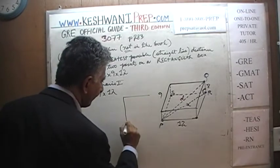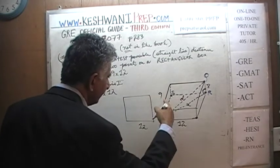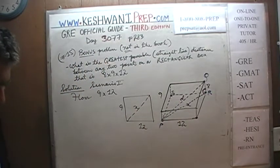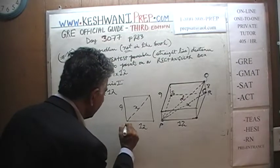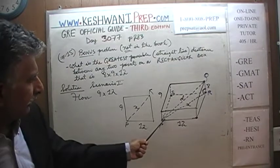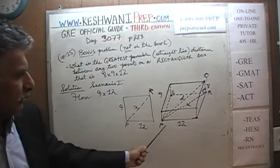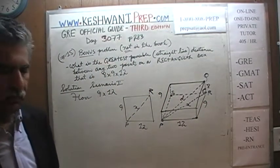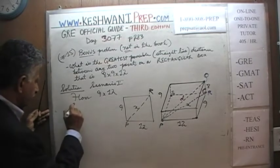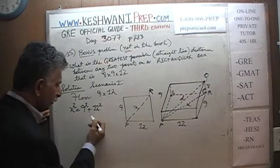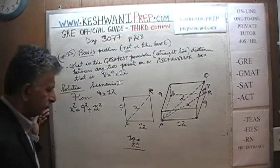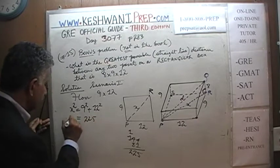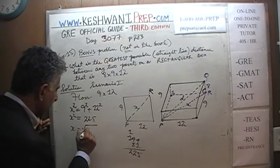Our floor looks like this: this side is 12, this side is 9. What we're looking for is this distance X, the floor diagonal — P to R. This distance from here to here is 9, and this distance is 12. X squared is going to equal 9 squared plus 12 squared. 12 squared is 144. 9 squared is 81. That's 225. So X squared is 225, which means X is the square root of 225, which is 15.